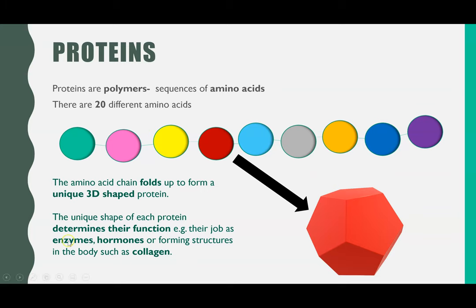For example, you could have enzymes which have that unique 3D shape to create an active site complementary to the substrate. Hormones will have a unique 3D shape so they can attach onto their target organ. And some proteins are for structural support like collagen, which you find in your skin and which stops you from wrinkling, so that would have a really strong 3D shape.